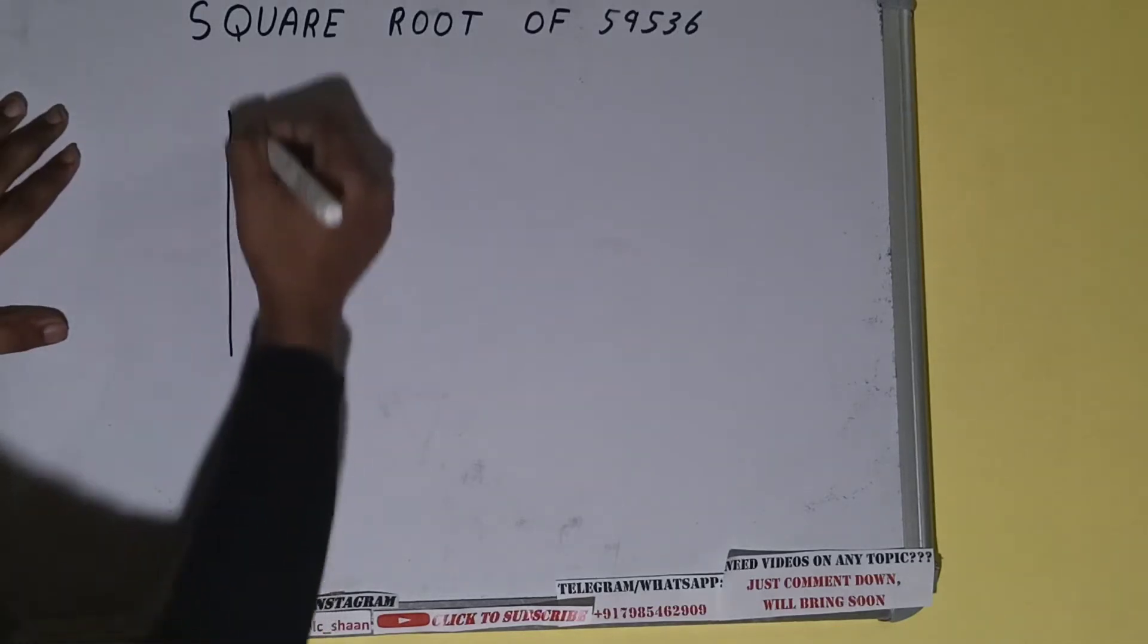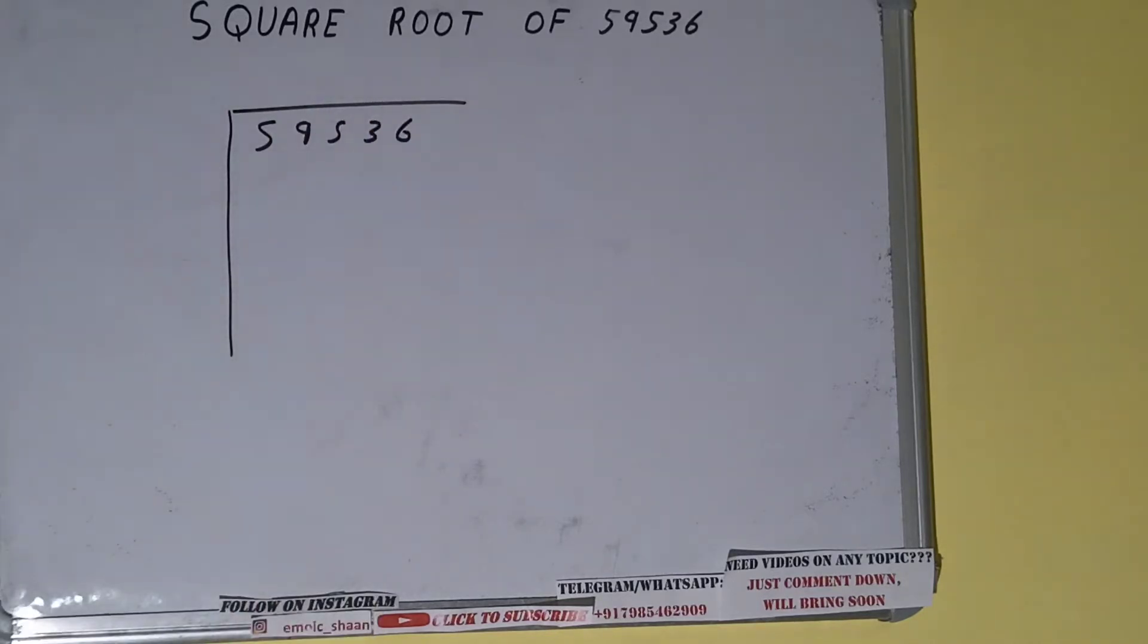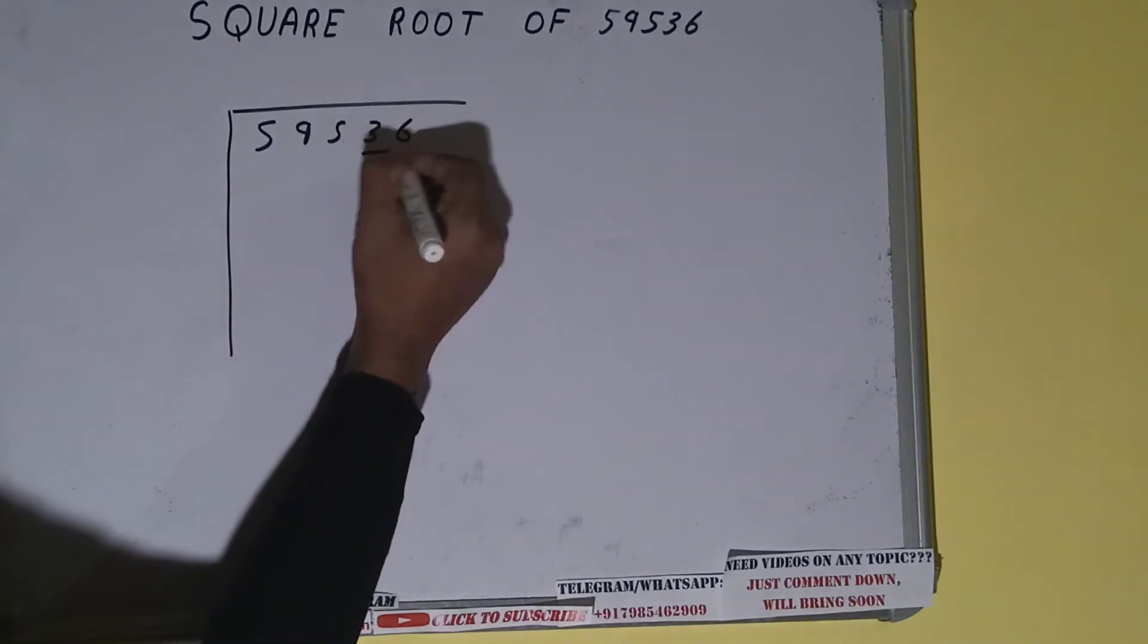First of all, we need to write the number like this: 59536. The next thing we need to do is form pairs from the right-hand side. So one pair will be this, one pair will be this, and this five will be left out.